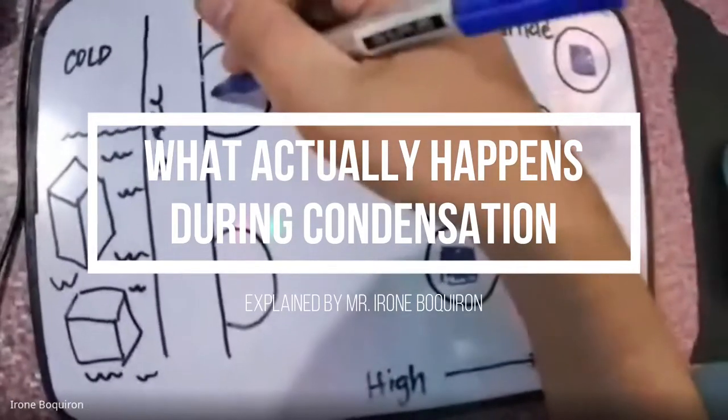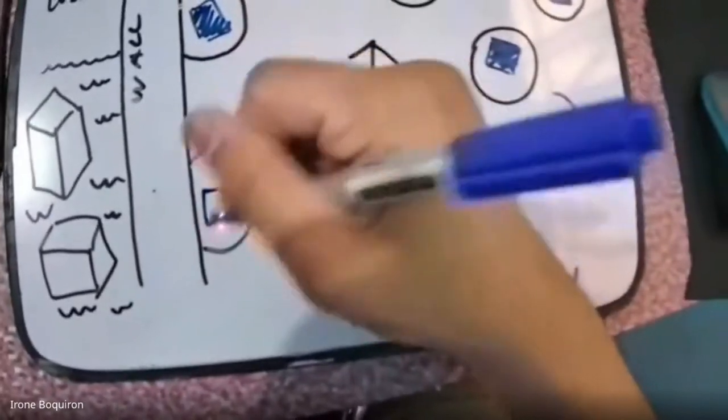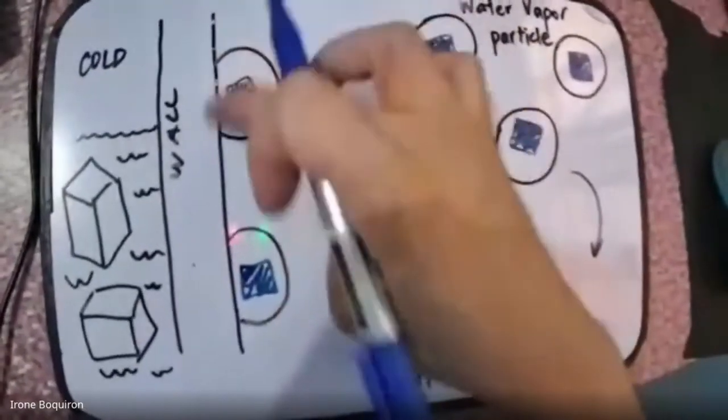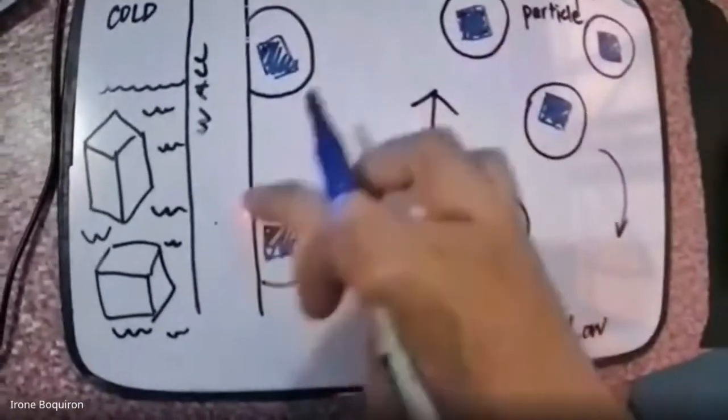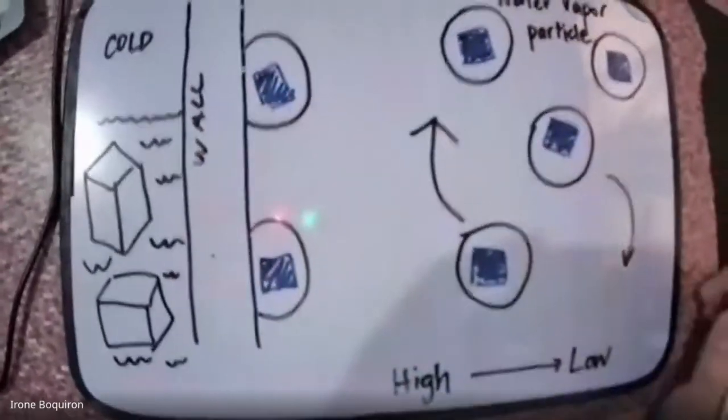Each water vapor particle contains heat, represented by the blue squares. This is an area of high heat. The wall of the glass is cool.